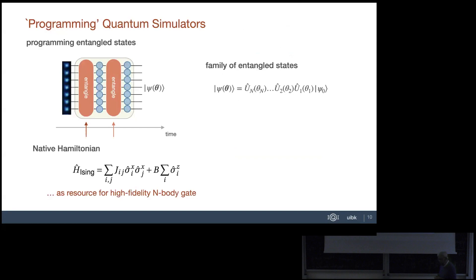Now we get more greedy: what is the family of entangled states we can generate with these resources? With our Hamiltonian — like having an n-body gate on your system — we can operate on 51 ions with very high fidelity. These are entangling operations. We can combine layers of the XY entangling Hamiltonian with layers of single-qubit rotations to generate a family of parameterized wave functions.